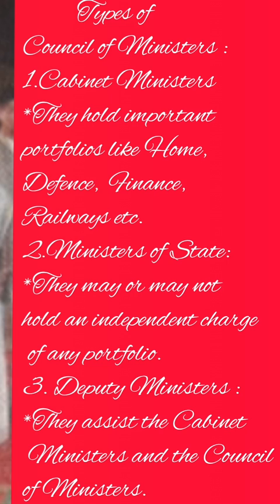The third type of Council of Ministers is Deputy Ministers. They are the third category of Ministers who assist or help the Cabinet Ministers and the Council of Ministers. They are Junior Ministers and are placed under Senior Ministers whom they have to assist or help. They take no part in the Cabinet deliberations.